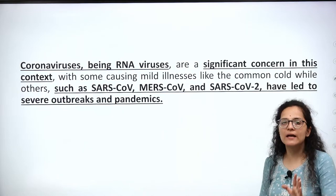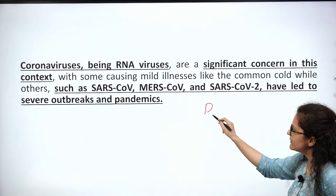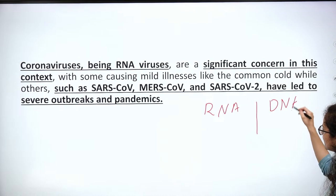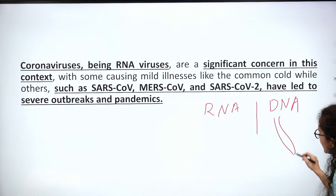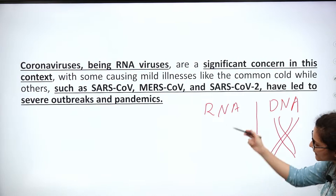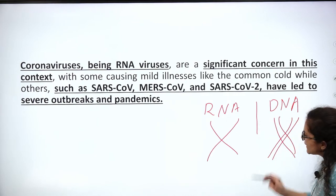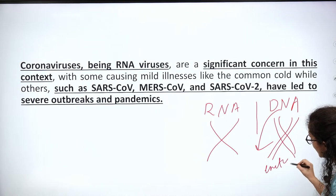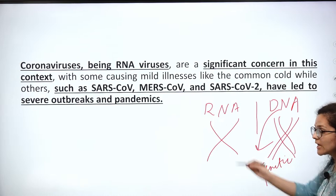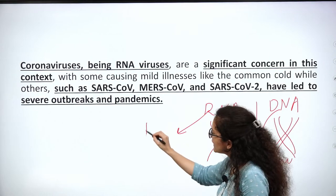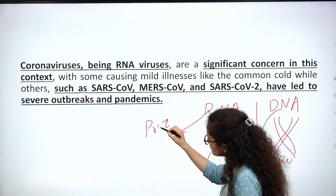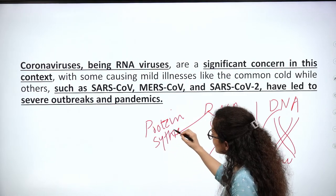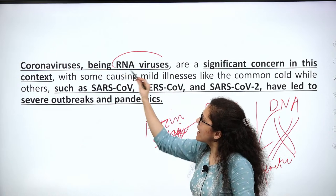Coronavirus is an RNA virus. There is a difference between RNA and DNA. DNA is a double helical structure and acts as a genetic material. RNA is single helical and helps in protein synthesis in our body. So coronavirus is an RNA virus.